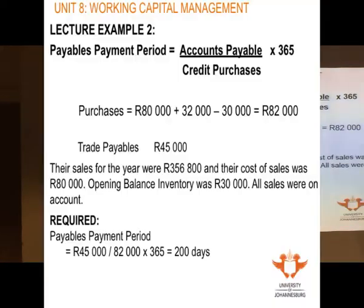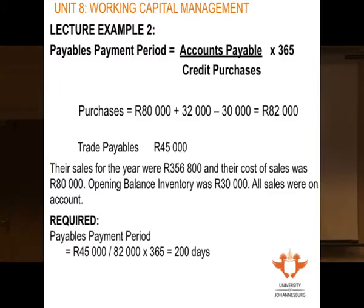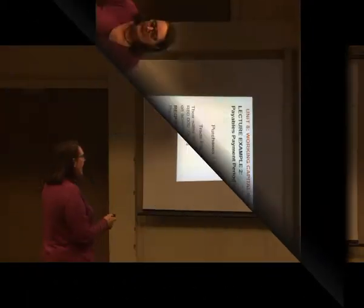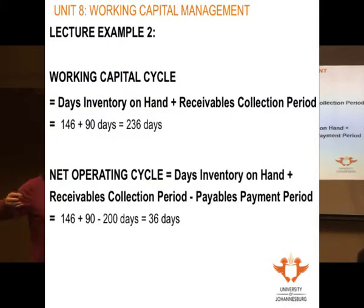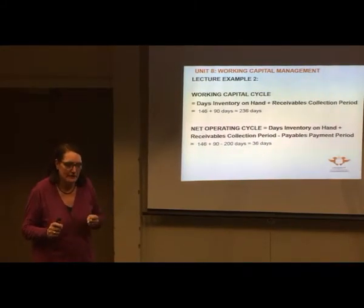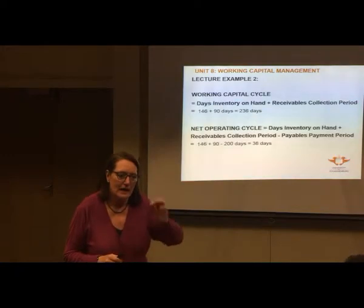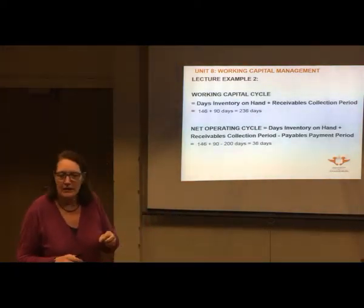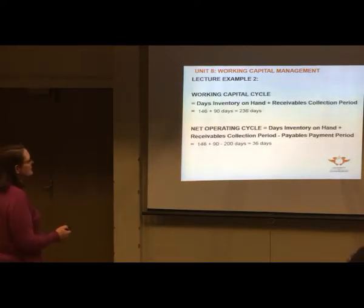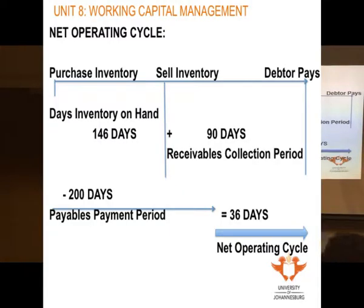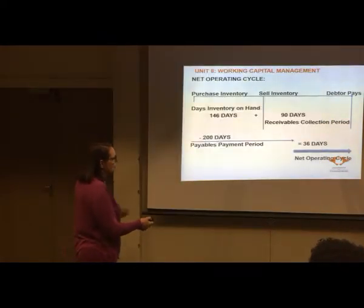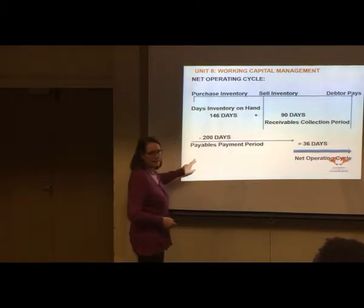Now you've got all the figures to calculate the net operating cycle: 146 plus 90 minus 200 gives you 36 days. So 36 days is just over a month — that's actually not bad. Your working capital cycle is 146 days plus 90 days equals 236 days, minus the payables payment period of 200 days, giving a net operating cycle of 36 days. So we've got a relatively short operating cycle here — that's quite good.